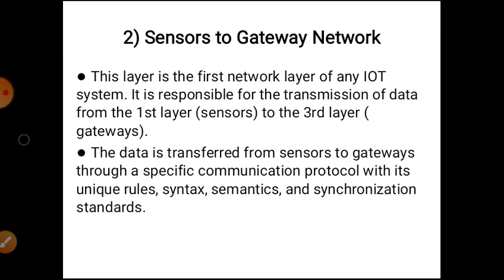Next is the sensor to gateway network. This layer is the first network layer of any IoT system. It is responsible for transmission of data from the first layer — that is, sensors — to the third layer, that is gateways. The data is transferred from the sensor to gateway through a specific communication protocol with its unique rules, syntax, semantics, and synchronization standards. The data transfer can only occur if both the sensors and gateways support the transmission protocol. Some common protocols used for connecting sensors with gateways are LoRaWAN, Zigbee, and Sigfox.